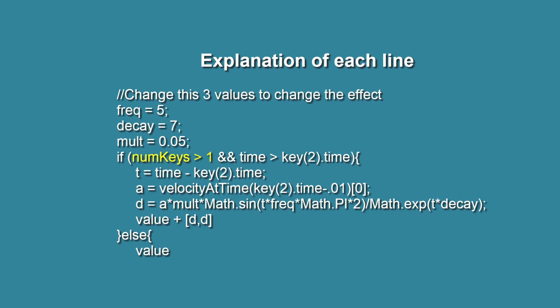This checks if there are at least two keyframes on the layer. This checks if the current time is after the second keyframe. If both conditions are true, the spring effect is applied. This calculates the time t that has elapsed since the second keyframe. This retrieves the initial velocity of the layer at the moment just before the second keyframe, taking the X component of the velocity. This is the core calculation for the spring effect — it creates a sine wave oscillation over time, multiplies the sine wave by the initial velocity and the multiplier to adjust the amplitude, and divides by an exponential function of time and the decay value to dampen the oscillation over time. The resulting value is the displacement D caused by the spring effect.